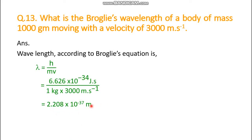Look at this value — 10⁻³⁷ meter. You know that 10⁻²⁴ meter is one yoctometer, and this is much smaller than even that. So a body having mass 1 kilogram may have wave nature, but that wave is very much negligible according to de Broglie's theory. Every moving body has wave nature, but it is negligible for heavier substances whereas it is accountable for lighter substances.